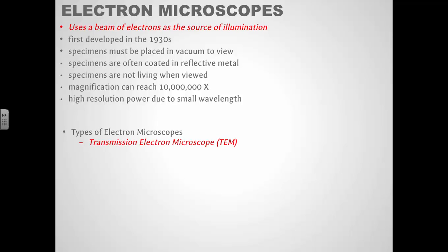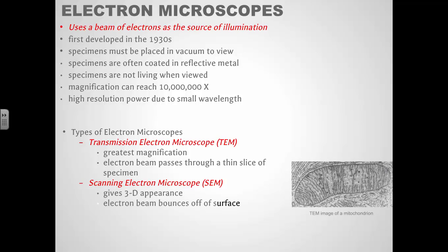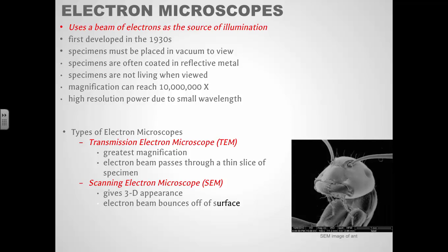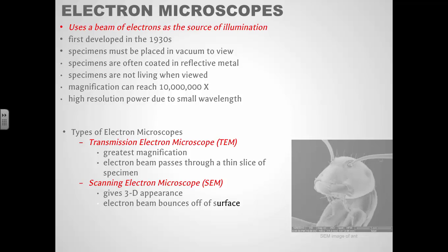There's different types. Transmission electron microscopes give the greatest magnification. And this is when the beam of electrons has to actually pass through the sample. So it has to be a thin slice. Scanning electron microscopes scan electrons over the surface of the object. So they can get sort of a 3D appearance. This is a transmission electron microscope image of the edge of a mitochondria. This is a scanning electron microscope image of an ant. So when you see those like really close-up pictures of insects and other weird things, those are often going to be scanning electron microscopes.